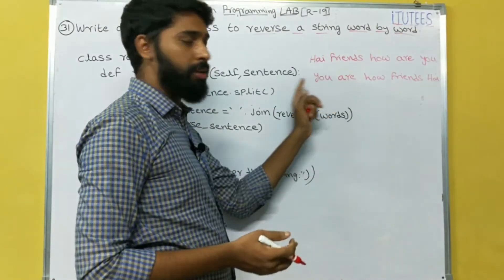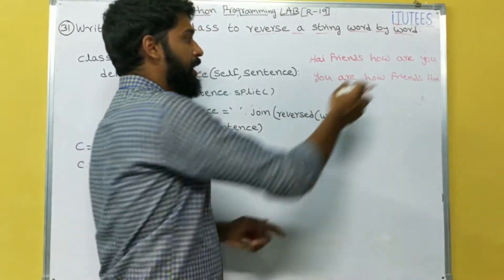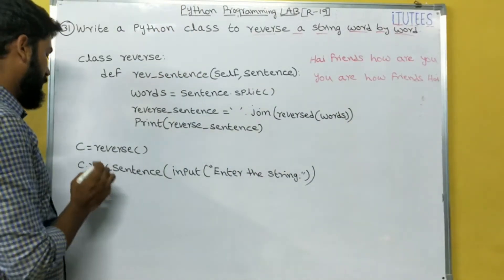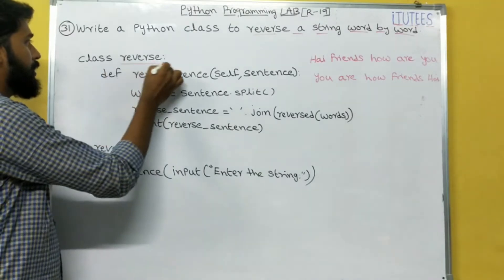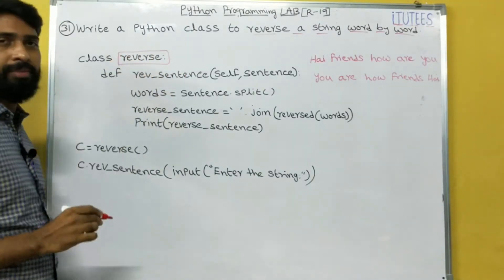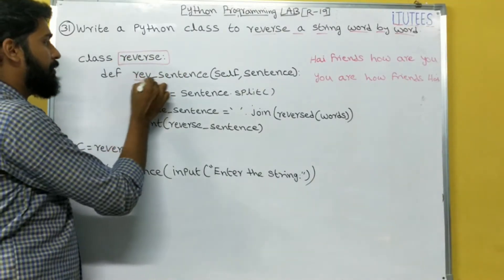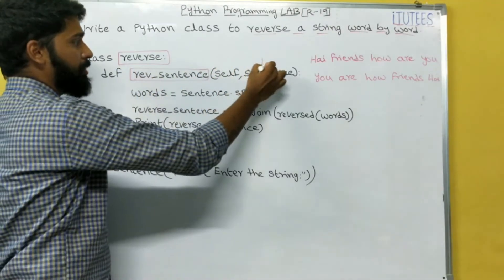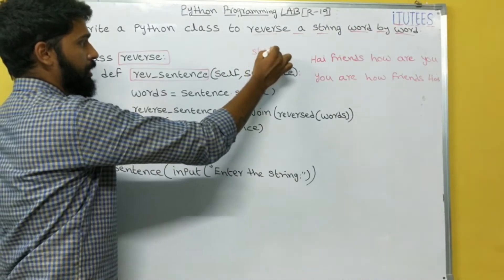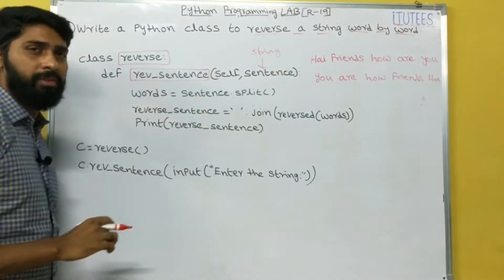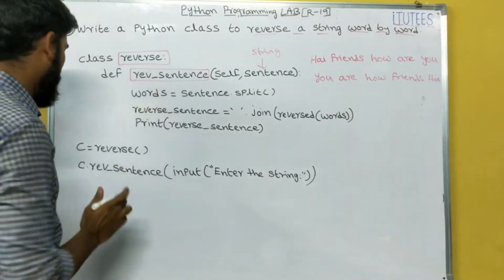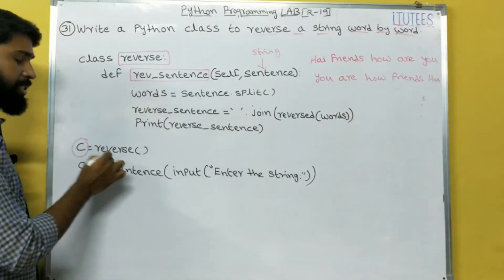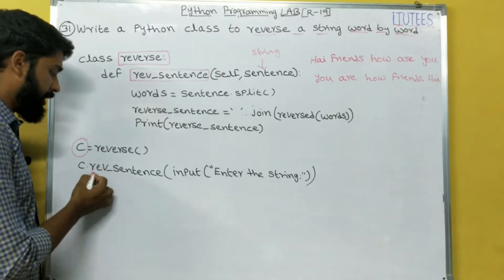After the execution of this function, you are going to print the reverse of the string word by word. I write one class — the class name is 'reverse'. In this class I define one method, the method name is 'reverse_sentence', which accepts one string. The object to the class reverse is 'c', and we call c dot reverse_sentence.